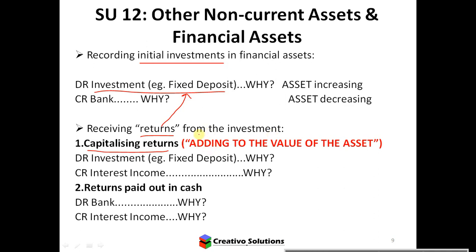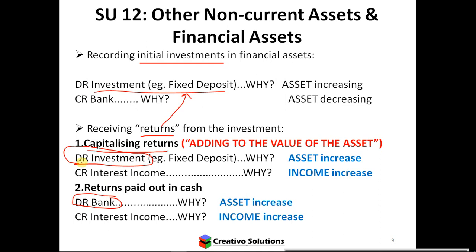If you want the interest paid to you instead of capitalized, you affect the bank — the bank goes up because you're getting more money paid. So you can either get the actual interest paid in cash, or ask for the returns to be capitalized. Either way they'll still affect income, because income increases when you get benefits. They're all assets — either increasing or decreasing.